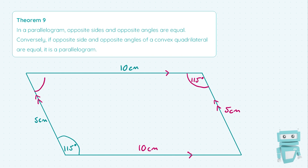All we know about the other two angles is that they're equal, so we're going to call both of their values x. We can set up an equation because there are 360 degrees total inside this parallelogram. We have 115 degrees, plus another 115 degrees, plus x, plus another x — so we add 2x — and we know that all of this added up equals 360 degrees.